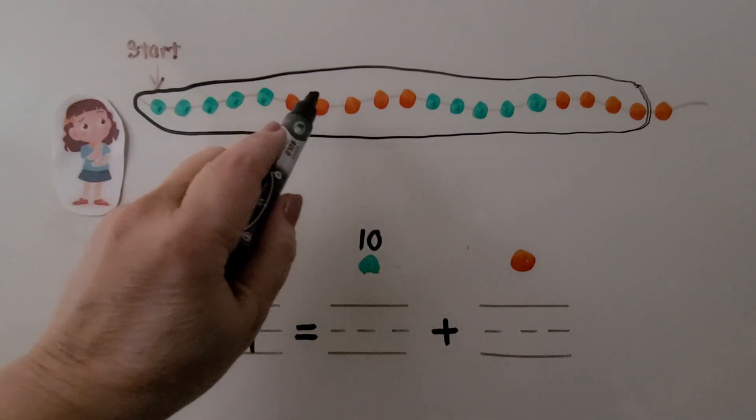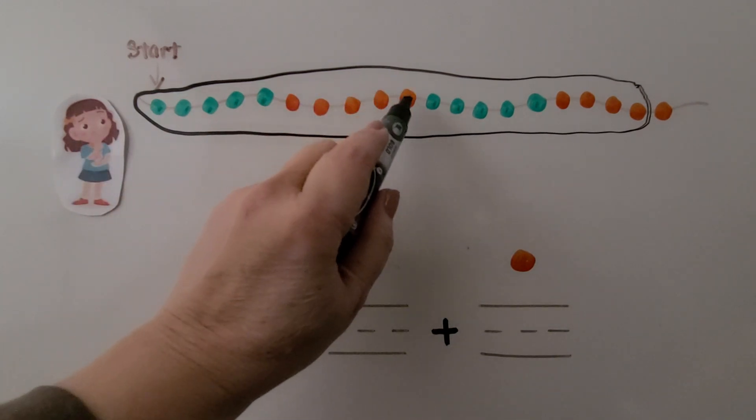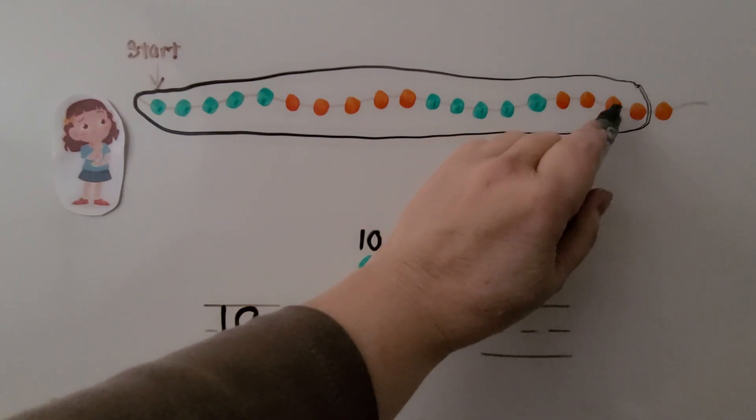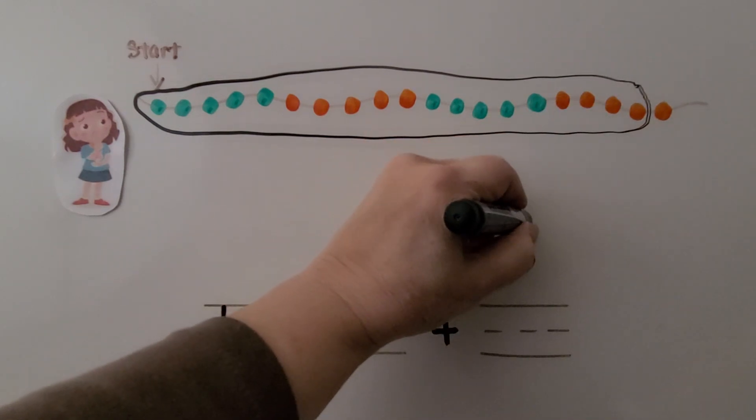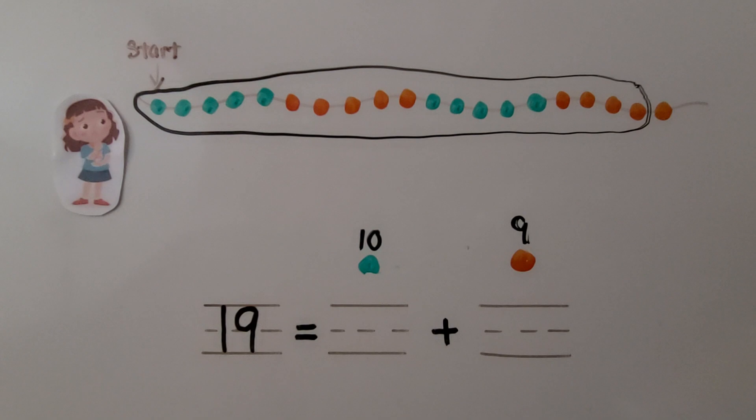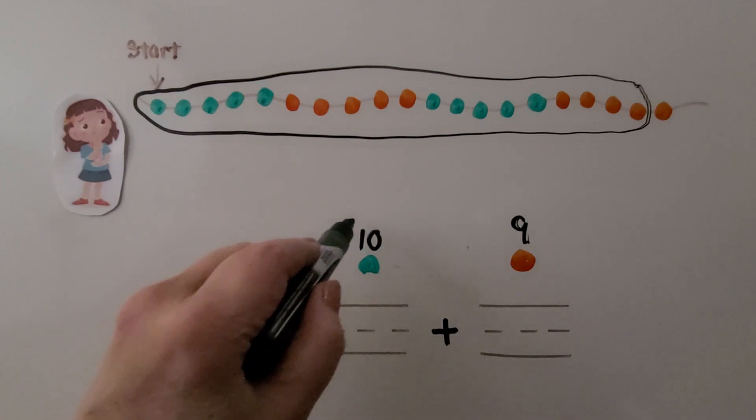And we circled 1, 2, 3, 4, 5, 6, 7, 8, 9 orange beads. Do you know which is more, 10 or 9? We need to circle the color bead that has more. If you said 10 is more than 9, you're right.